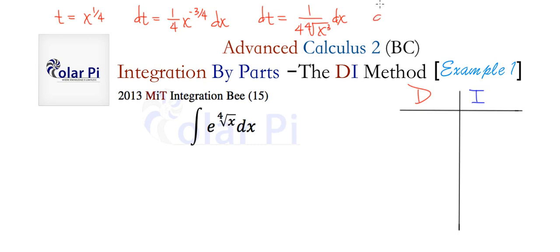Because T is equal to the fourth root of X, the fourth root of X cubed is T cubed. That's to say that DT is equal to 1 over 4 T cubed DX. And so from this, we see that DX is equal to 4 T cubed DT. All right, so we see that the given integral is the same as E to the T, and then DX is 4 T cubed DT, so we can write the 4 right here, and then T cubed DT. Now, this here looks like an integration by parts problem, and so we'll use the DI method.